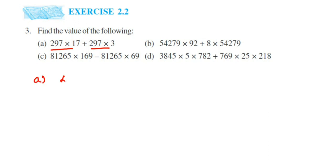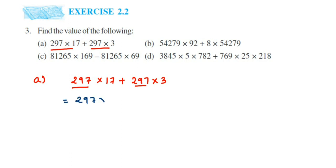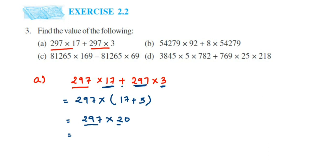So for the first question: 297×17 + 297×3. Since 297 is present on both sides, this equals 297×(17+3). The addition 17+3 is 20, so we get 297×20. Now 297×2 is 594, and then put a zero at the end, giving 5940. That's the first question.